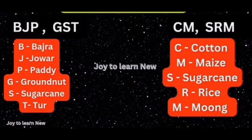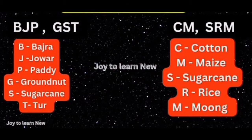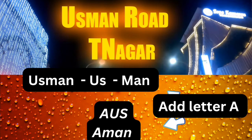The shortcut for Kharif crops is 'BJP GST CM SRM'. B stands for bajra, J for jowar, P for paddy, G for groundnut, S for sugarcane, T for tur, C for cotton, M for maize, S for sugarcane, R for rice, M for mung.